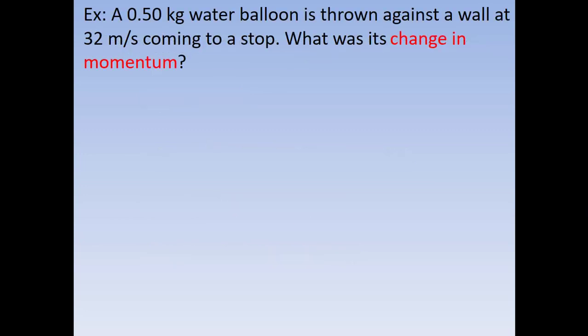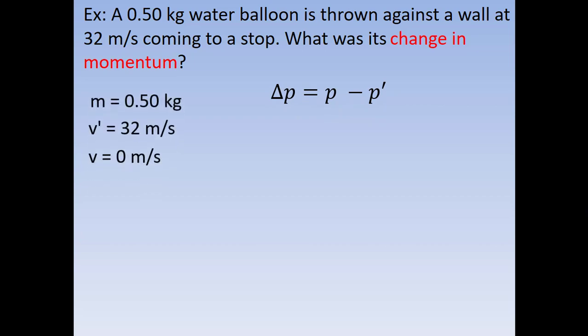Let's look at an example. We've got a water balloon — a pretty big one, half a kilogram. We're going to throw it against a wall. The speed that we throw it with is 32 meters per second, and then it's going to come to a stop. We want to know what is its change in momentum. We know that change in momentum is found by taking the final momentum minus the initial momentum. The problem is we don't know the momentum — we're given the mass, the initial velocity, and the final velocity, but not the momentum. Can we find it?